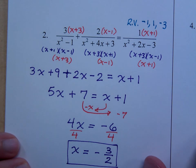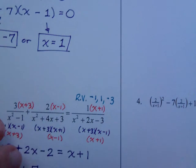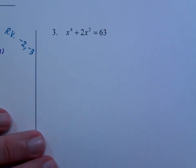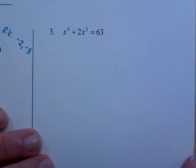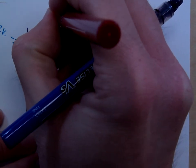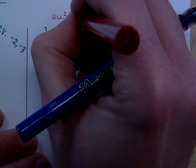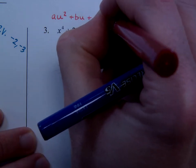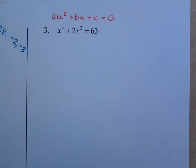These are rational equations, those that contain fractions. Let's look at number 3. 3 and 4 are what we call equations that are quadratic in nature. Remember, quadratic in nature means they can be written in this form: a u squared plus b u plus c is equal to 0, where u can be any variable expression.